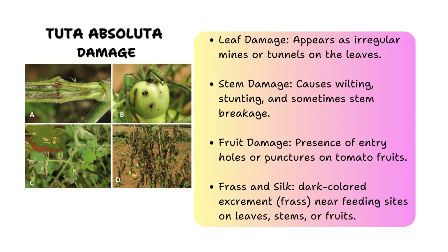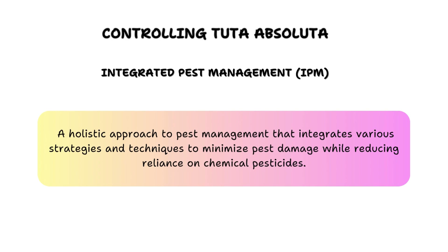To identify damage caused by Tuta absoluta: on the leaves, larvae create characteristic mines or tunnels by burrowing into the leaf tissue, leading to extensive defoliation and reduced photosynthetic capacity. On the stems, larvae burrow into the plant tissue causing wilting, stunting, and sometimes stem breakage. On the fruits — where damage is most significant — larvae tunnel directly in, leading to rotting, premature ripening, and deformation. Entry points created by larvae also provide pathways for secondary infections by bacteria, fungi, and other pathogens.